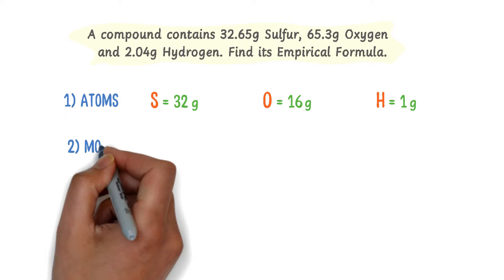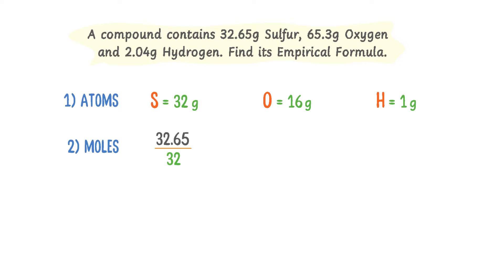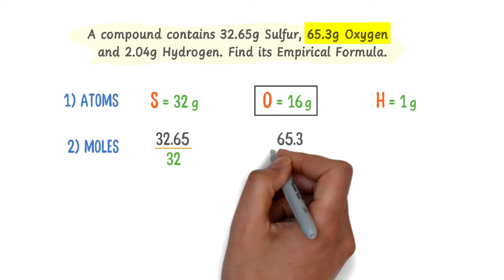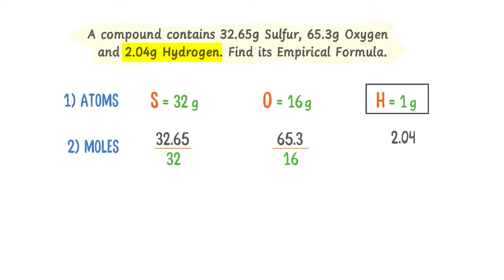Secondly, I will calculate the number of moles of the given elements. The given mass of sulfur is 32.65 grams, divided by the relative atomic mass of sulfur which is 32 grams. Similarly, I divide the given mass of oxygen, 65.3 grams, by the relative atomic mass of oxygen which is 16 grams. Also, I divide the given mass of hydrogen, 2.04 grams, by the relative atomic mass of hydrogen which is 1 gram.